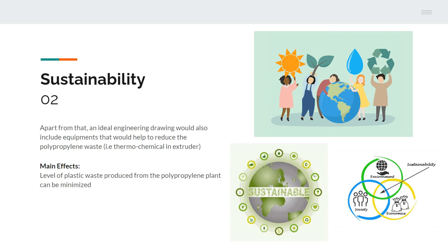Now let us take a look at the sustainability aspect. Apart from that, an ideal engineering drawing would also include equipment that would help to reduce polypropylene waste, so the level of plastic waste produced from the polypropylene plant can be minimized. In terms of sustainability, during the production of polypropylene plastic, we do have multiple options to determine which is the most suitable way for us to treat our polypropylene waste.